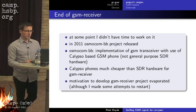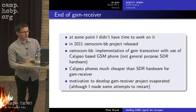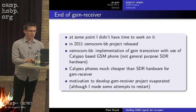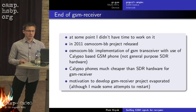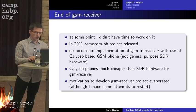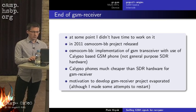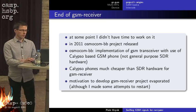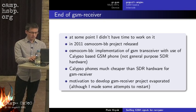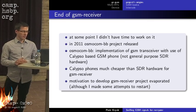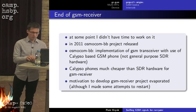I didn't have time to work on it for a period. Then in 2011, the OsmocomBB project was announced and very soon released. OsmocomBB is an implementation of a GSM transceiver using Calypso-based phones that you can buy cheaply on eBay, not using general-purpose SDR hardware. Calypso phones are much cheaper than the SDR hardware GSM receiver was using, so my motivation almost evaporated, though I made some unsuccessful restart attempts.